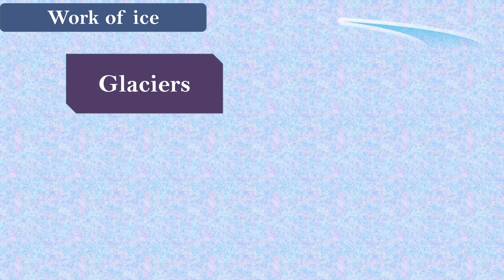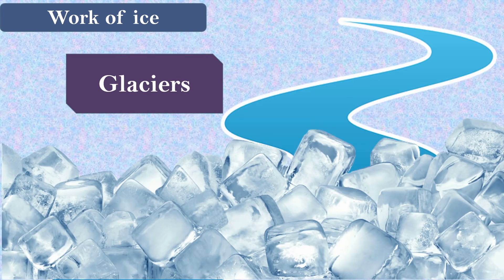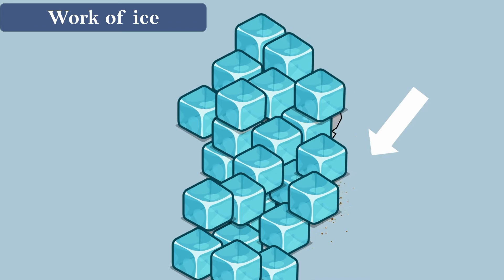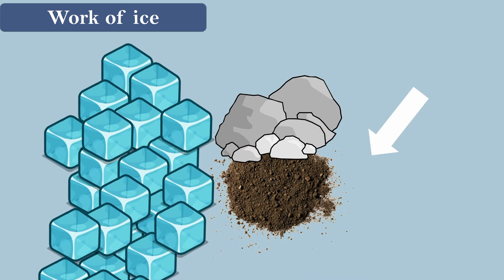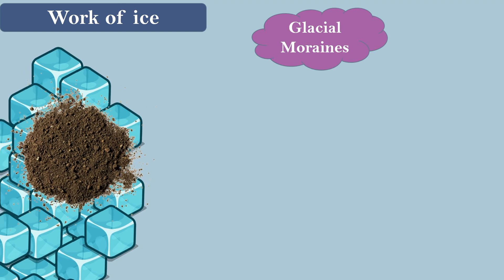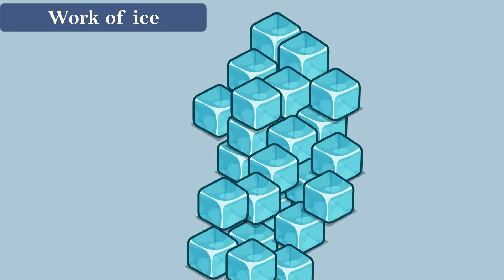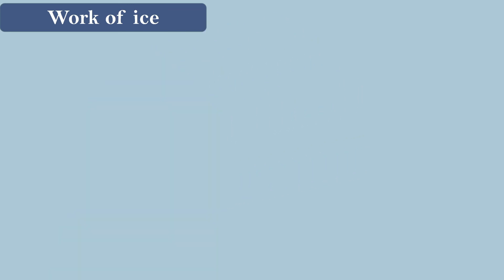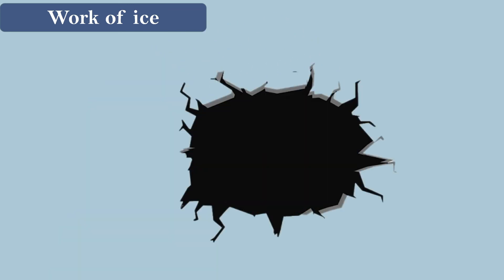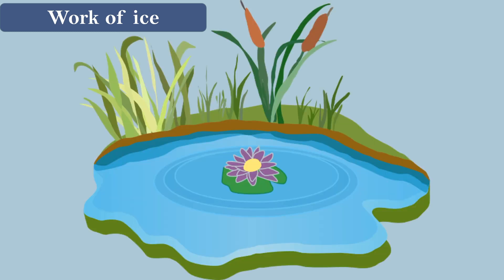Glaciers are simply rivers made up of ice. When these move, they reveal the rock and soil beneath them, which become new landforms. Sometimes when they move, they deposit the eroded material forming glacial moraines, which are also a type of landform. Sometimes as they move, they create cracks which are filled with water, and as vegetation blooms, it forms beautiful lakes.